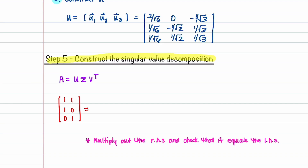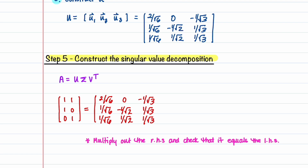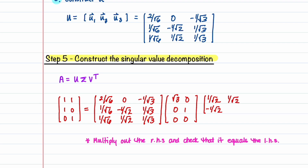Step 5 — the easiest step — is to construct the singular value decomposition. We've already found all three matrices. Our final answer is U times Sigma times V transpose. Remember to transpose matrix V, giving V transpose = [1/root 2, 1/root 2; -1/root 2, 1/root 2]. You can verify by multiplying out the right-hand side to confirm it equals A. Now you have a solid foundation for applying SVD in linear algebra and real-world applications.